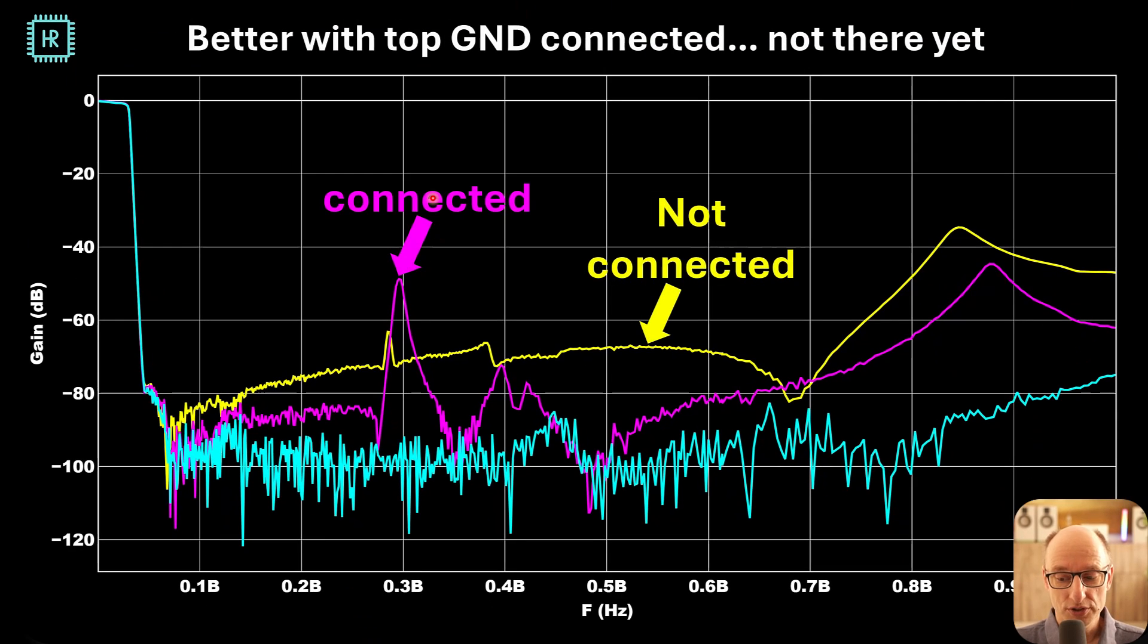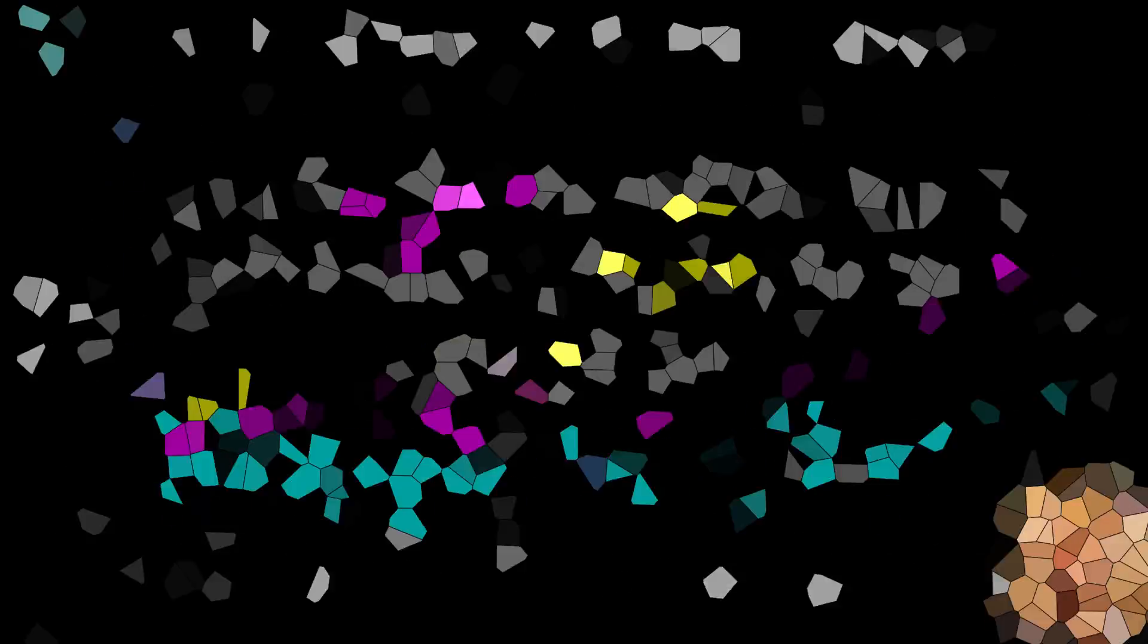So these are the results. The blue line is basically the 4 layer board, our reference. The purple line or pink, whatever it is, is when it's connected. And the yellow line is when it's not connected to the top ground. And what you can see, it's actually getting quite a lot better, except for here, there's some crazy resonance. But overall, it does help to connect the top ground, but we're not there yet.